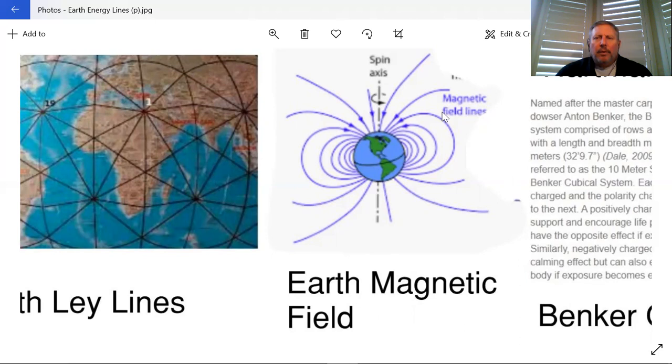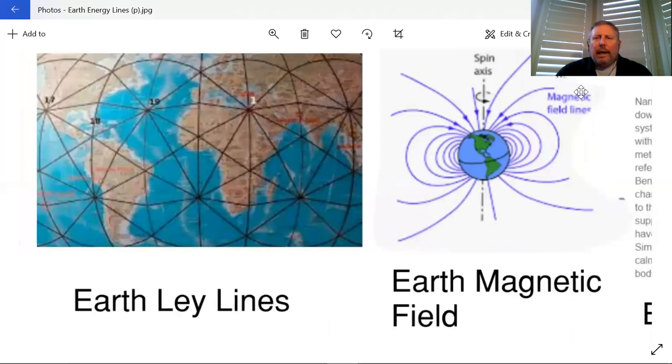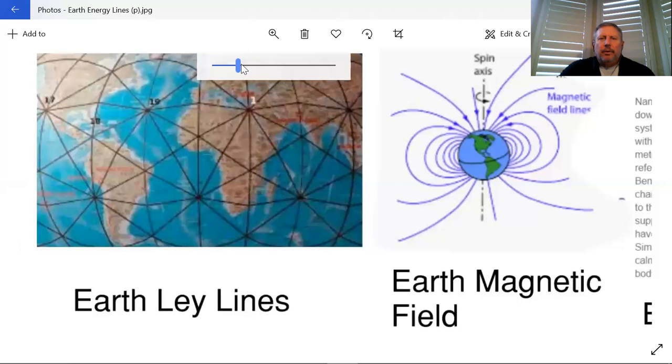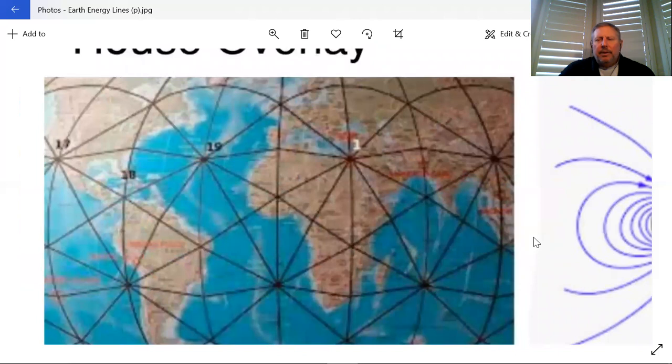The other question is, what are ley lines? What are ley lines compared to these Hartman-Curry energy grid lines? What's the big difference between all these lines?